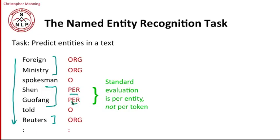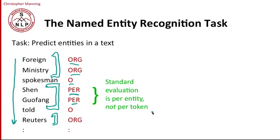You can think of that as making a classification for each token in a sequence. But in a way that doesn't terribly make sense, because really our unit of interest is these whole entities — the person and the organizations. And so, the standard and better task-motivated evaluation used for named entity recognition is to evaluate per entity, not per token.